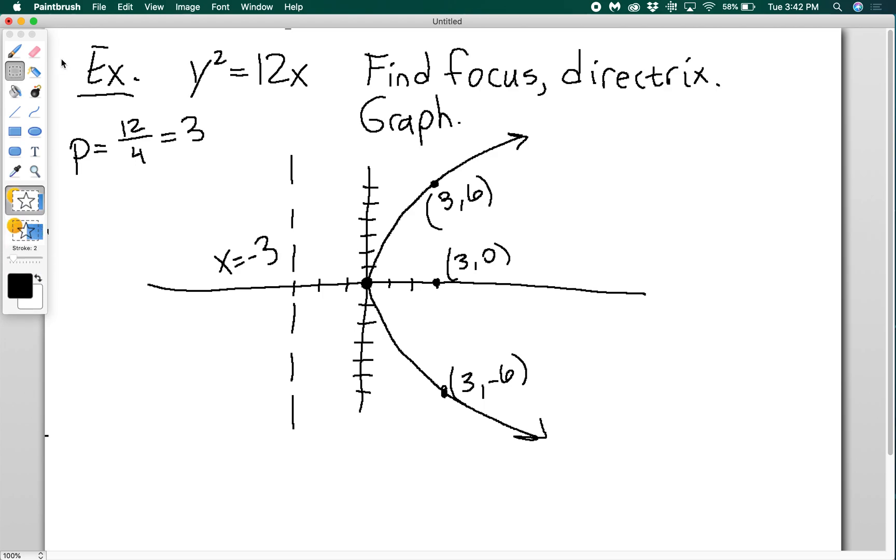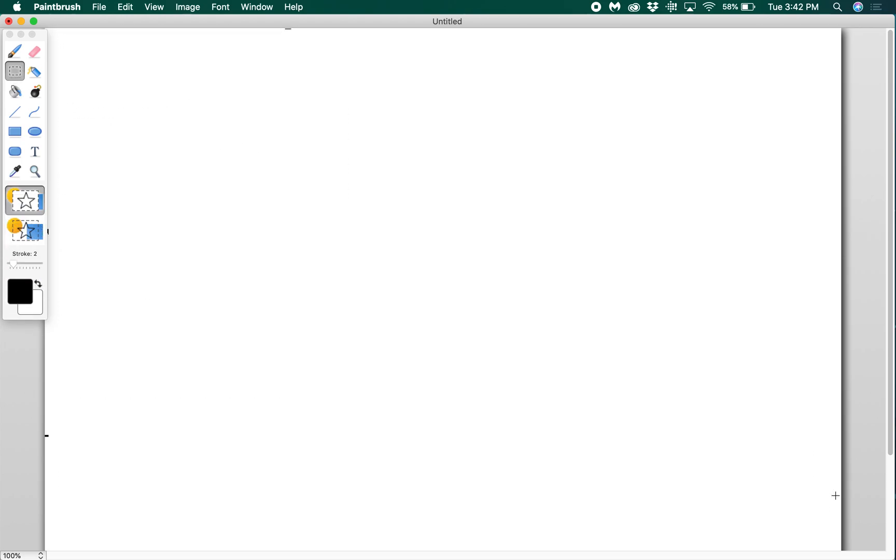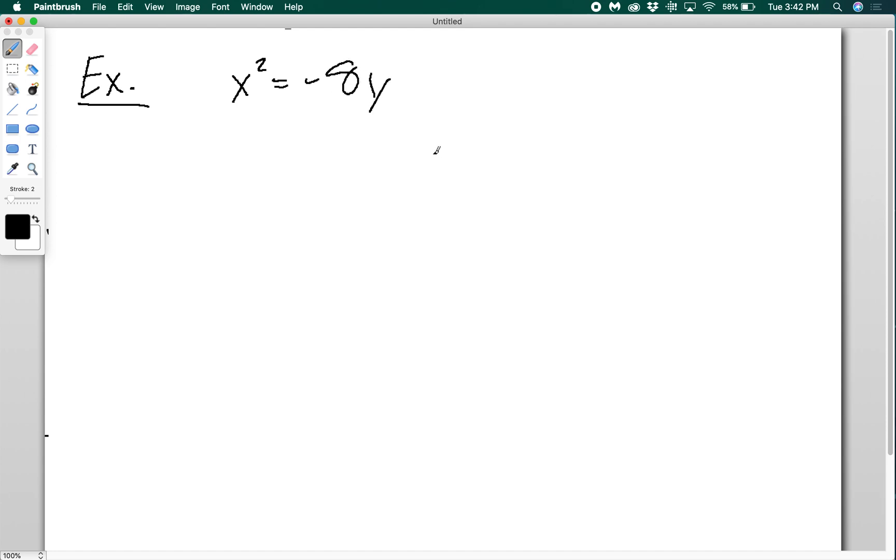Just because these ones are pretty quick and easy. So let's say now I have x squared equals negative 8y. So in this case, I know a couple things. First, I have an x squared term, which means my axis of symmetry is going to be vertical. So my parabola is either going to open up or down. The negative sign here tells me that it's actually going to open down instead of up. So once again, this parabola's vertex is at the origin.